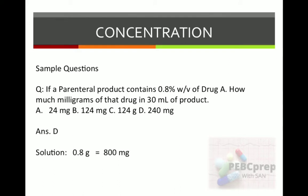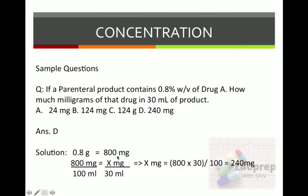How? We need the answer in milligrams, so we convert: 0.8 grams equals 800 milligrams. So 800 mg over 100 ml equals X mg over 30 ml. X = 800 × 30 ÷ 100 = 240 milligrams. That is the answer.